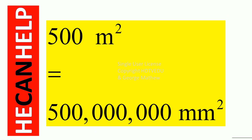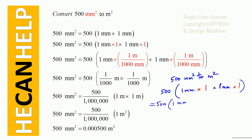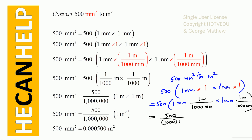Now if we are asked to convert the other way — to convert from 500 millimeter squared to meter squared. Again, 500 times 1 millimeter times 1 millimeter. We know the conversion: 1000 millimeters equals 1 meter. So this becomes 500 divided by 1000 times 1000 meter squared.